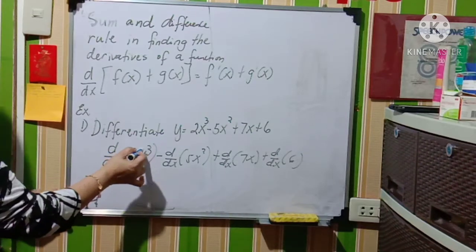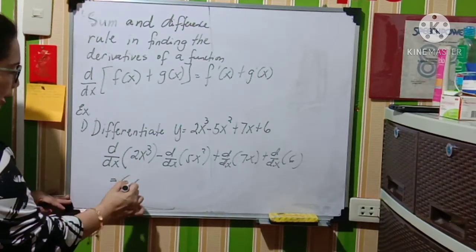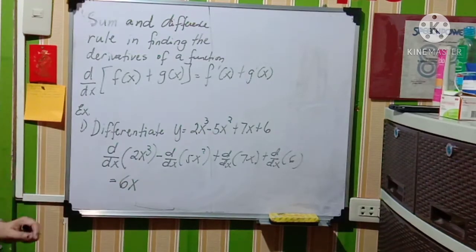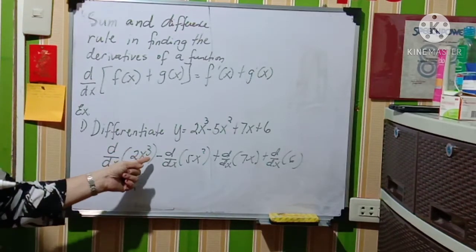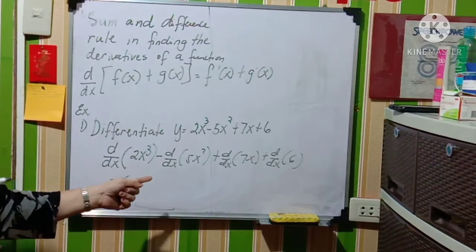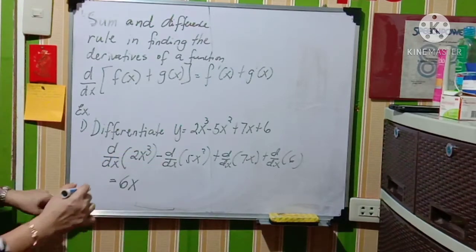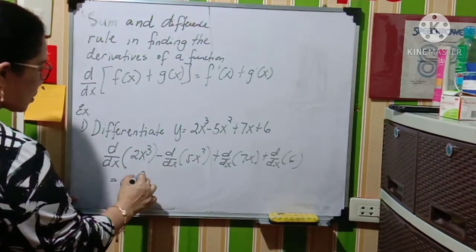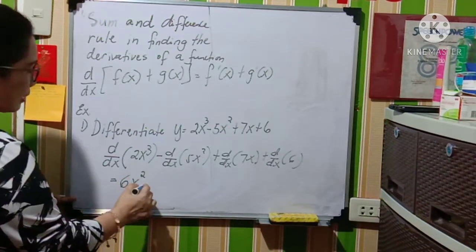And subtract 1 from the exponent, where n is the exponent. So 3 minus 1 is 2, giving us 6x squared. And then copy the negative sign.